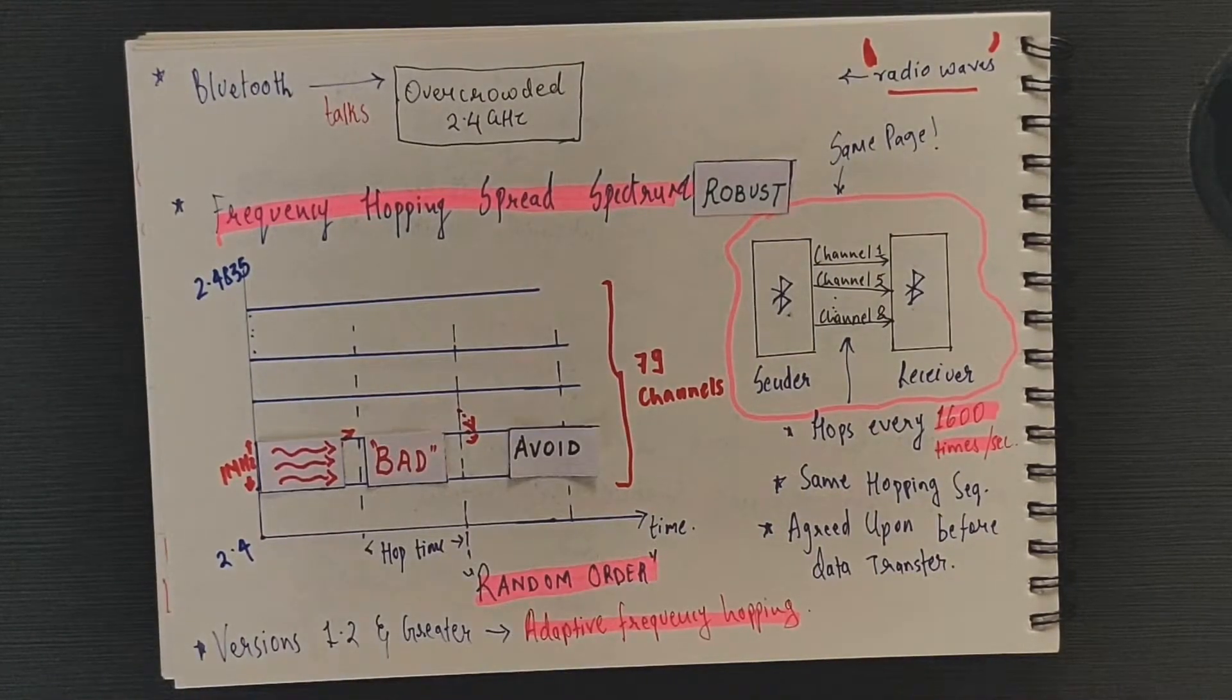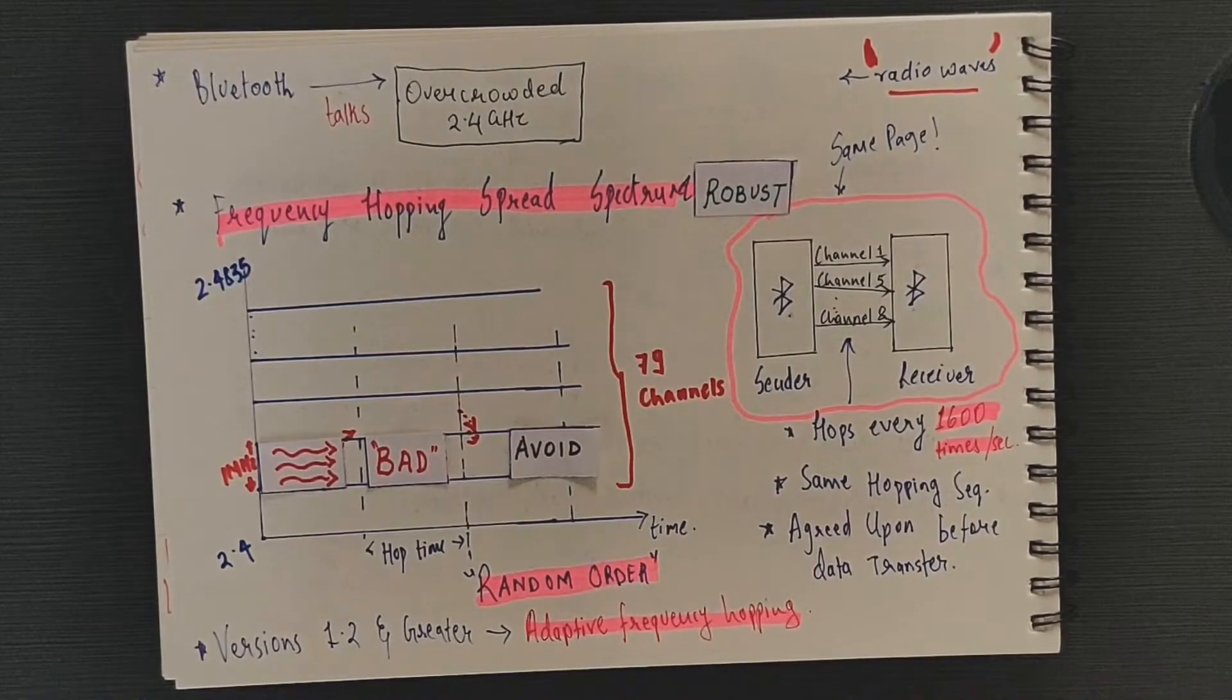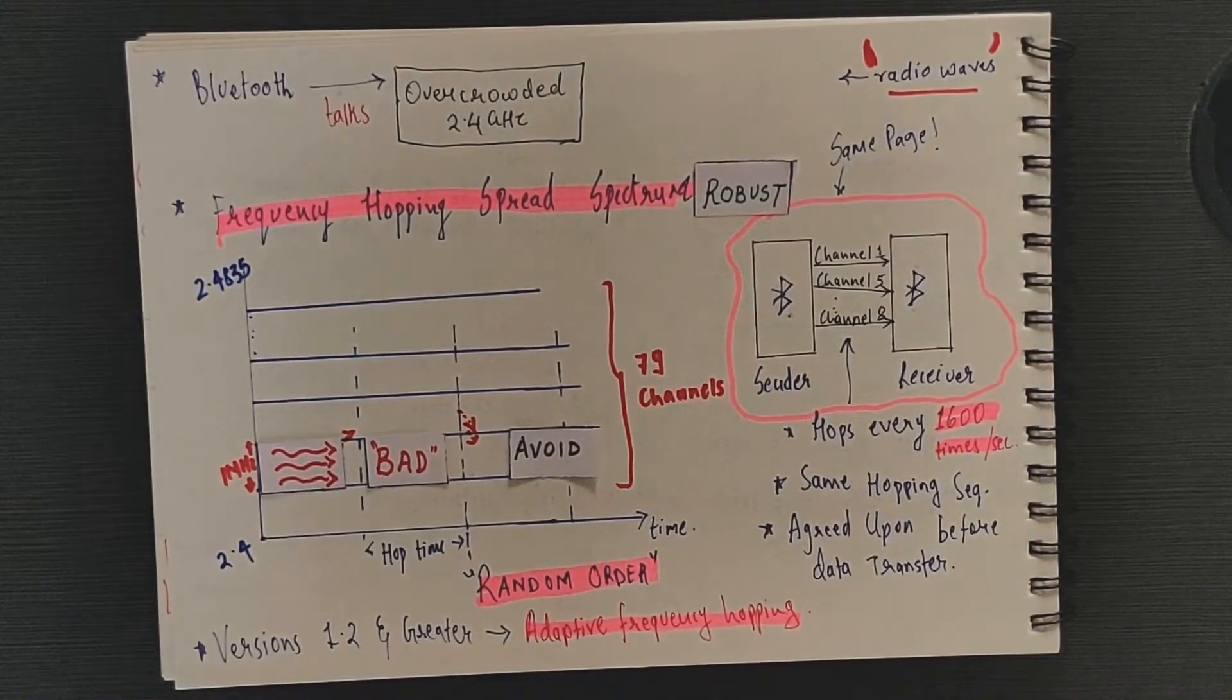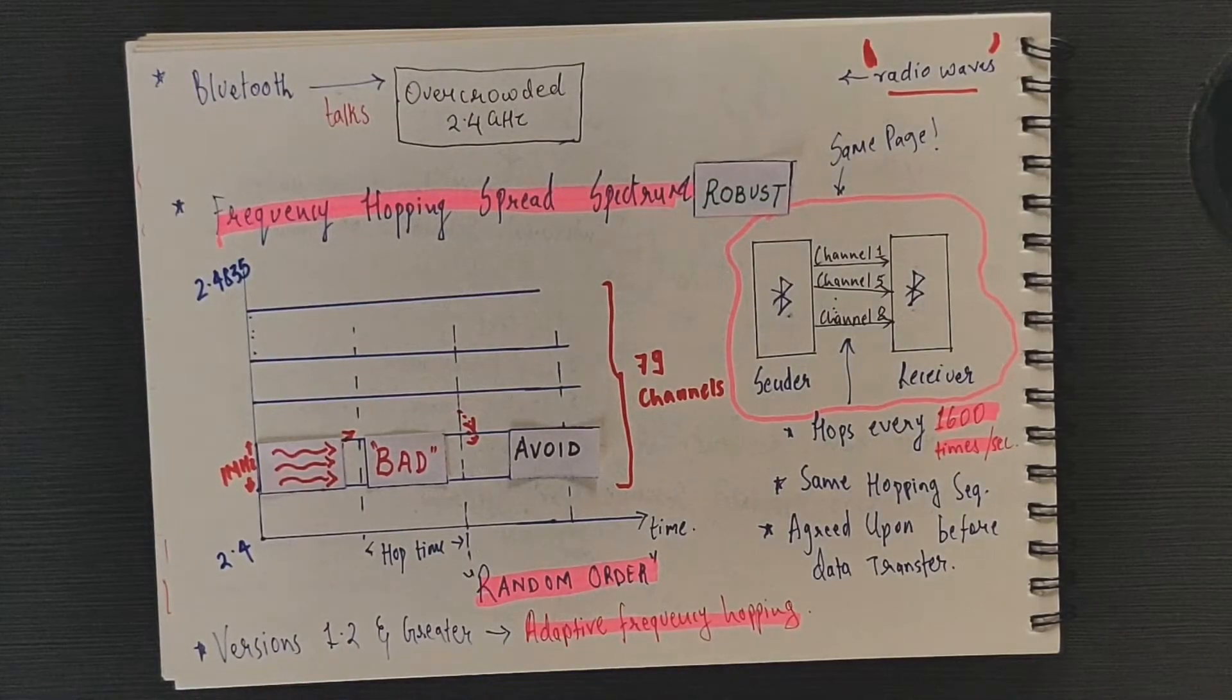Then the sequence of hops is modified such that the frequency channels with high level interference are avoided. The bad channels in this frequency hopping pattern are replaced with good channels via a lookup table.